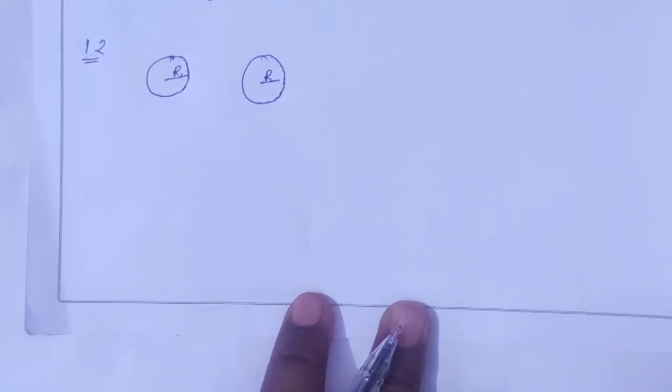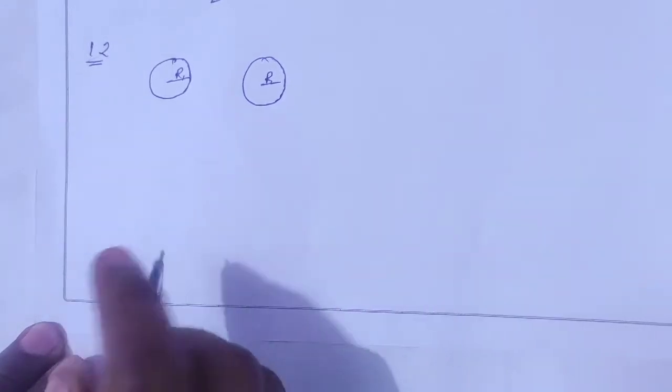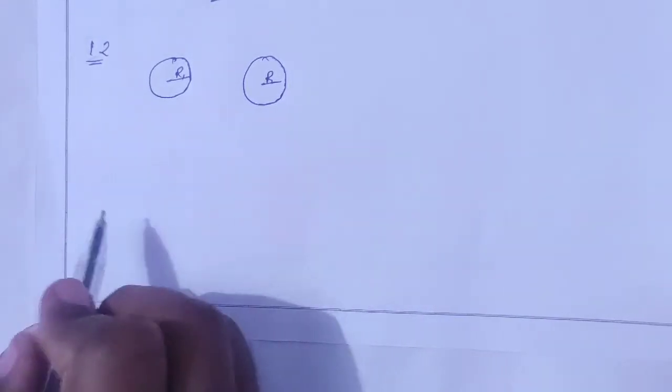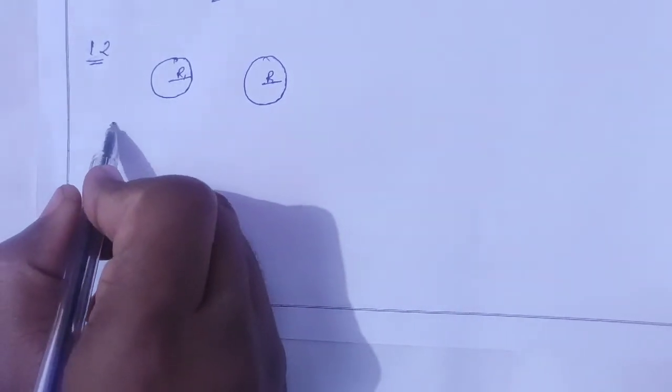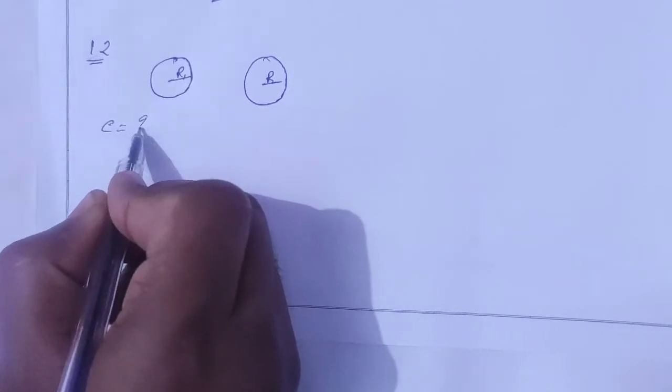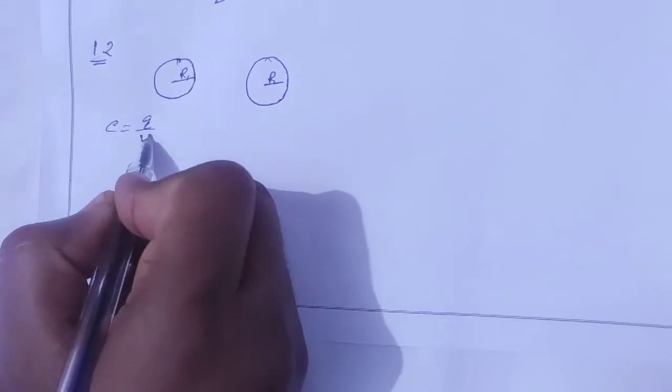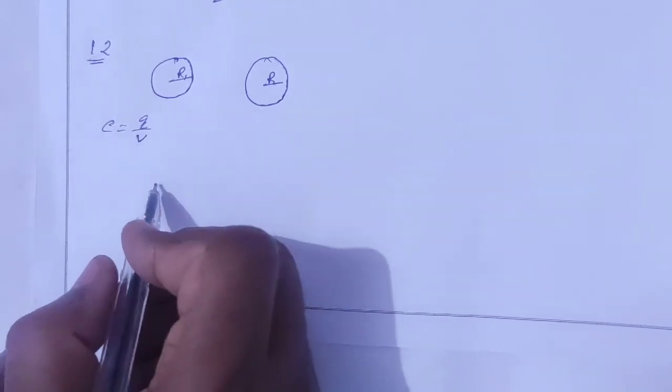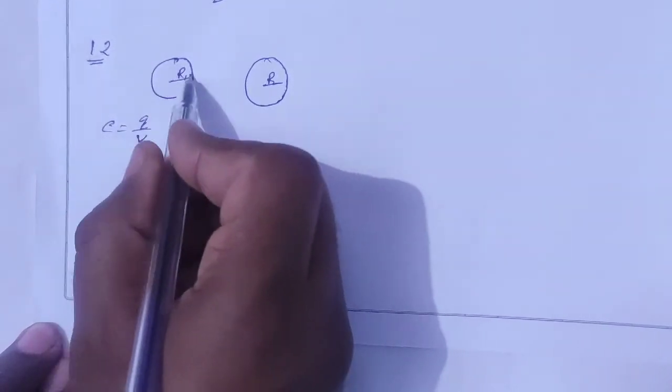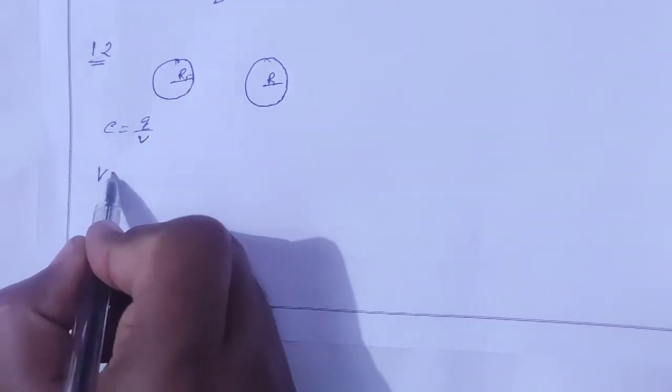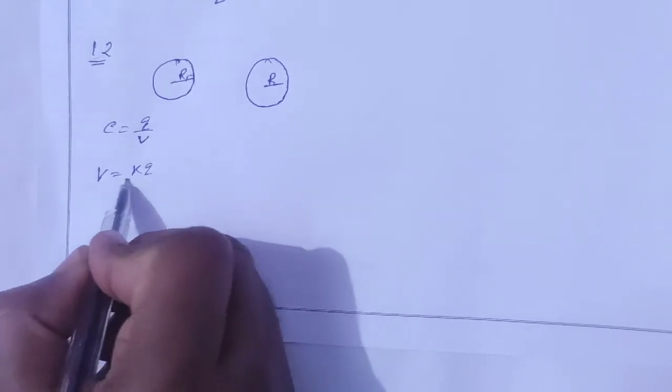To find the capacitance of a sphere, we use the simple formula C equals Q by V. But here we don't have Q or V given, right? So first, we need to find V for the sphere. The potential V for a sphere is V equals kQ by R.